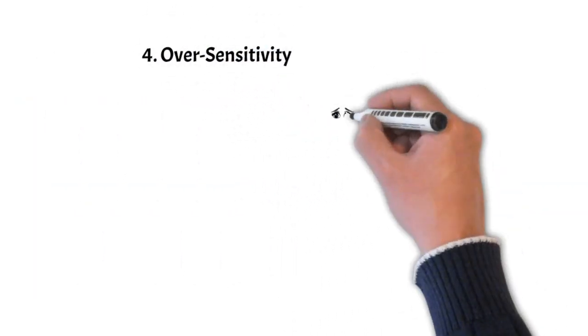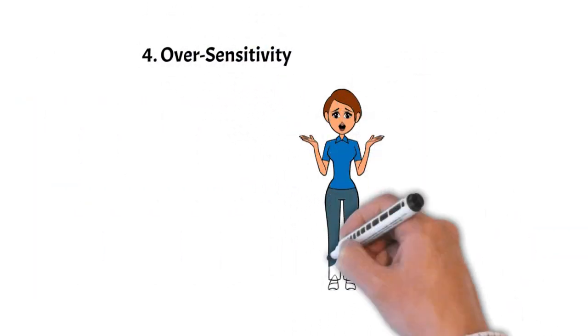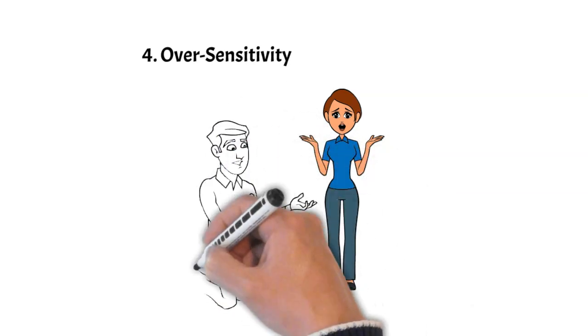Number four, oversensitivity. Type 2s might take things personally and can be easily hurt or offended, leading to unnecessary misunderstandings.